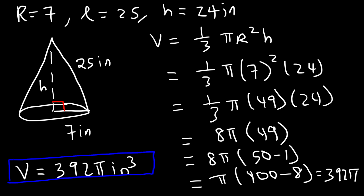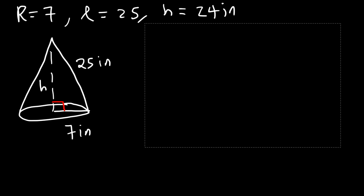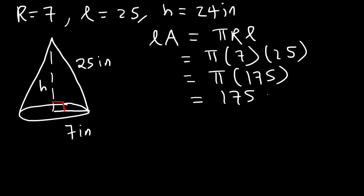Now let's calculate the lateral area. The lateral area is π times r times l. R is 7 and l is 25. 7 times 25 is 175. So the lateral area is 175π square inches.